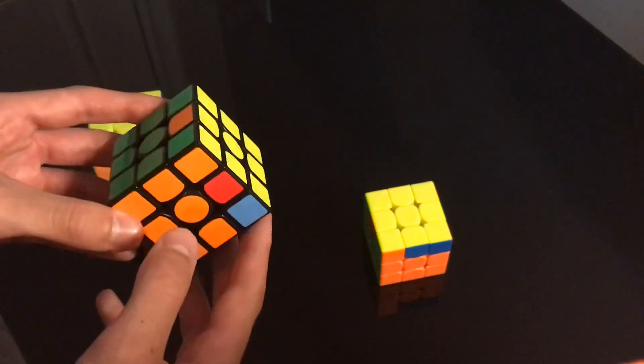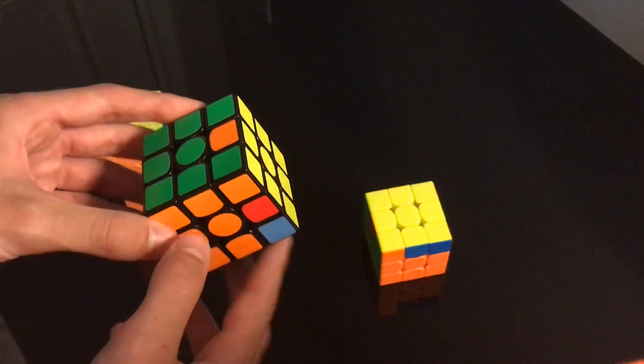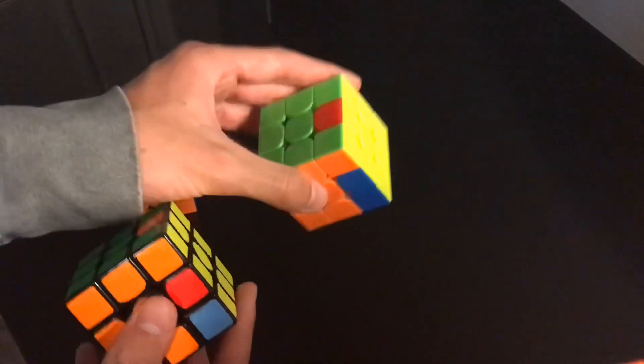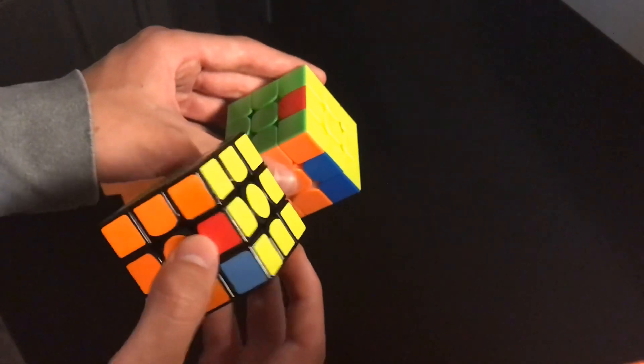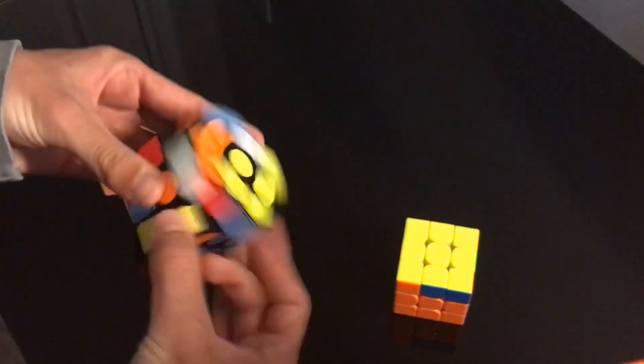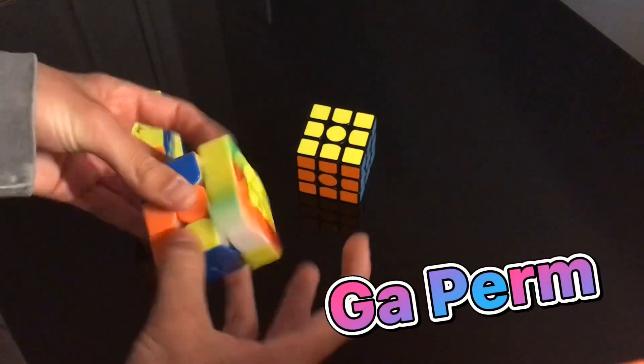So this is a GC perm right here. So how we recognize it apart from the other one is its edge is not opposite, it is adjacent. And this has a block right here, the other adjacent case. So we're going to go U2 and then just do our alg. And this of course does have a block, so we're just going to do our case.